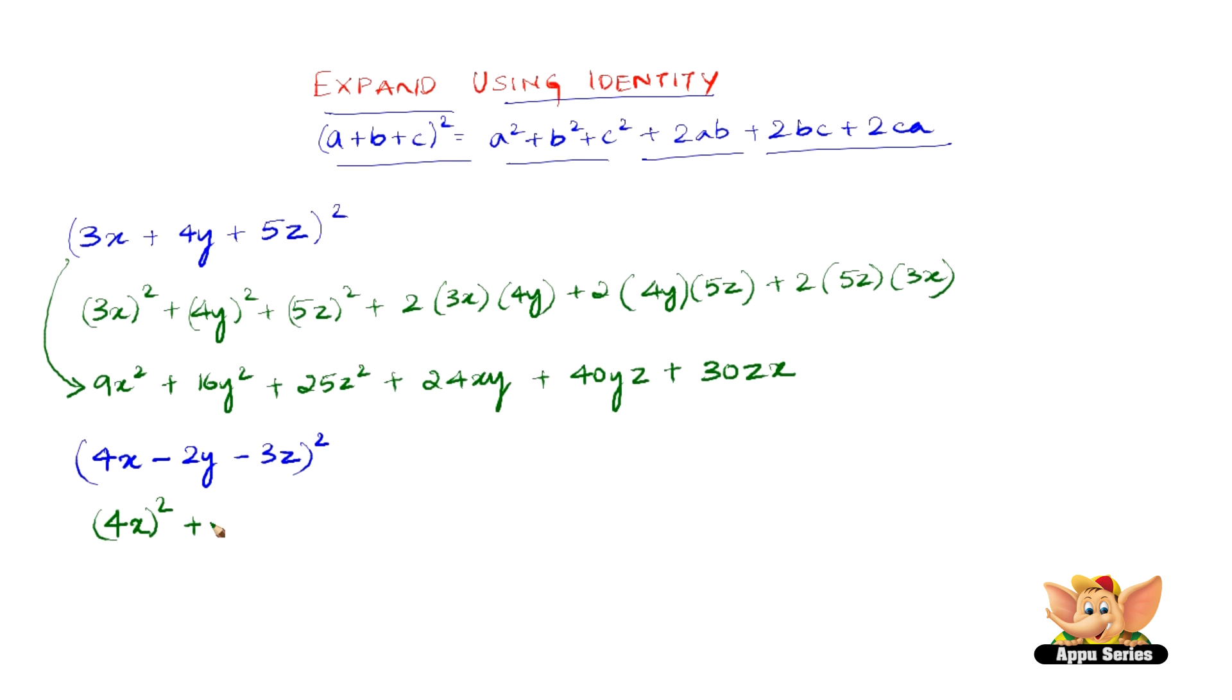So 4x the whole square plus minus 2y the whole square plus minus 3z the whole square plus 2 into 4x into minus 2y, minus 2y because b here is minus 2y, plus 2 into minus 2y into minus 3z because c is also minus 3z and then plus 2 into minus 3z into 4x.